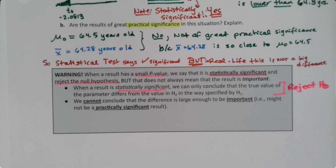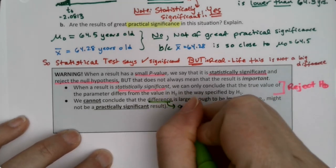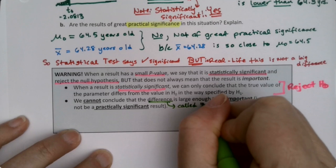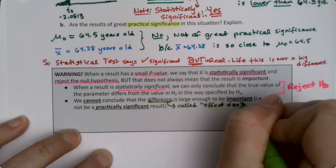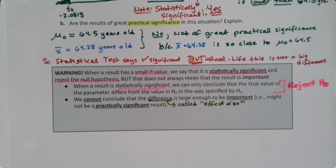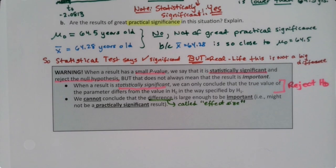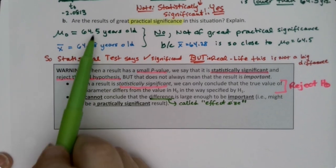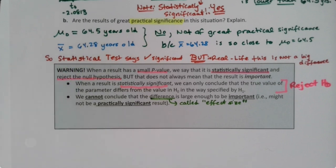We cannot conclude that the difference is large enough to be important — it may not be a practically significant result. Now the difference actually has a name: it's called the effect size. The effect size is one way you can measure the difference. Basically, you're asking how big of an effect did this have. We see it only going down by a little bit — that's the effect size, and that effect size might not be that important.